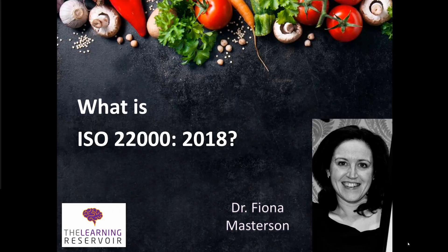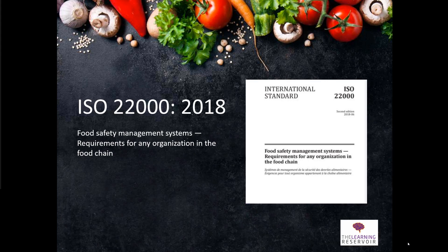Hi, it's Fiona Masterson from The Learning Reservoir, and in this video I'm going to take you through what ISO 22000:2018 is. It is an ISO international standard created by the International Standards Organization, and it is a food safety management standard applicable to anyone involved in the production of food along the food chain — from the farmer all the way through to the retailer and restaurants and so on.